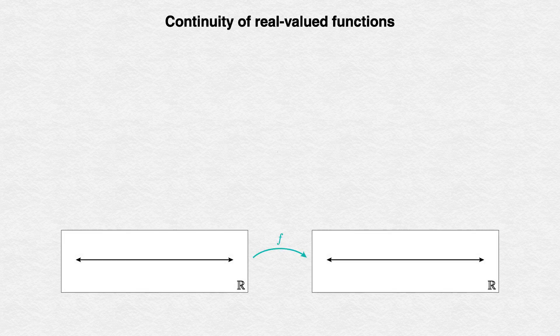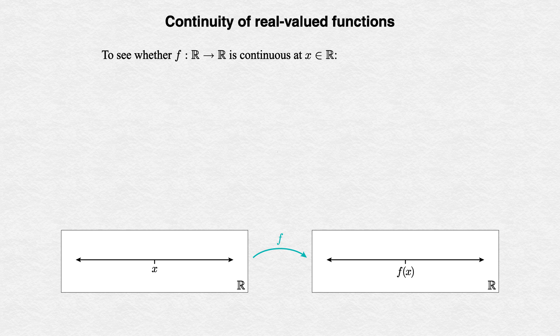Let f be a function from the real line to the real line. We should conceptualize f as an active operation that takes each real number x given as input and sends it to a real number we denote by f(x) as its output. What it means for f to be continuous at a particular point x in its domain should be considered as follows: the function f maps our input point x to some point f(x) in the codomain.